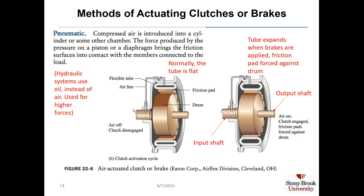In a pneumatic clutch or brake, compressed air is introduced into a cylinder or other chamber. The force produced by the pressure on a piston or diaphragm brings the friction surfaces into contact with the members connected to the load. Hydraulic systems use oil instead of air for higher braking forces. In the diagram, normally the tube is flat so the friction pad does not touch the drum. When air is turned on, the tube expands and the friction pad is forced against the drum, slowing it down.